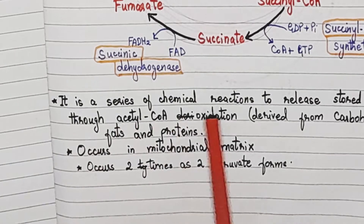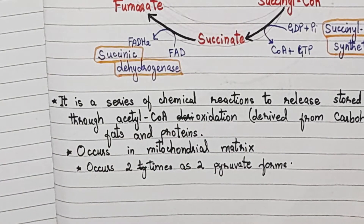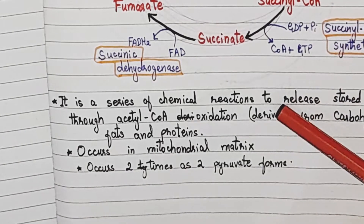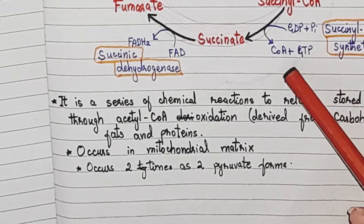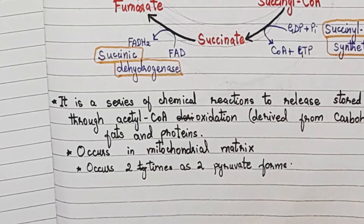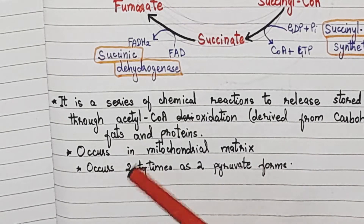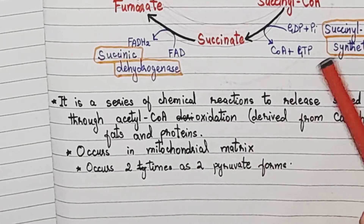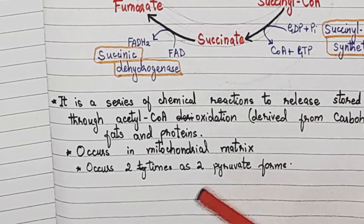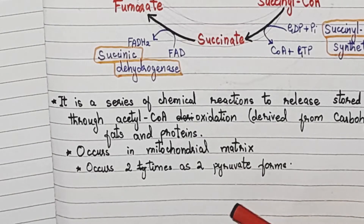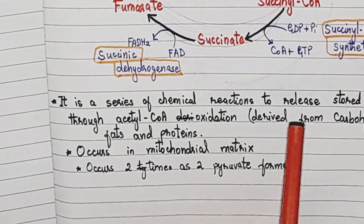The citric acid cycle is a series of chemical reactions in which stored energy in acetyl CoA — derived from pyruvate — undergoes complete oxidation. The stored energy is released through this cycle. Acetyl CoA can come from carbohydrates, fats, or proteins. Oxidization occurs in the Krebs cycle, and it runs 2 times for one glucose molecule because we have 2 pyruvates.